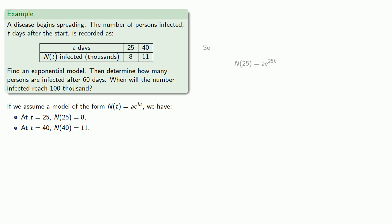And so we know that N(25) is ae to the power 25k, and N(40) is ae to the power 40k. And since we know N(25) and N(40), we can replace the left-hand side.